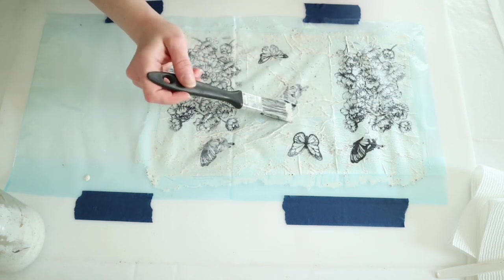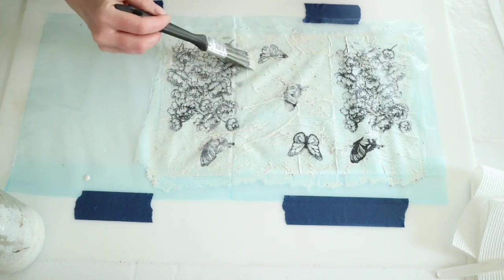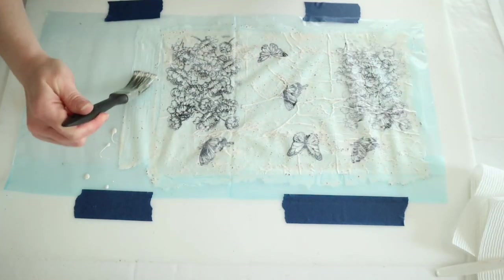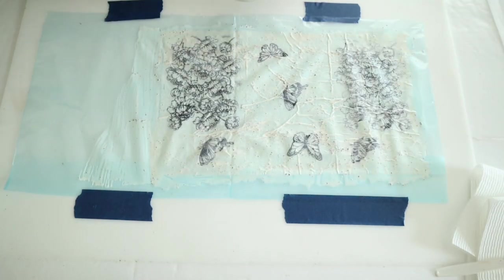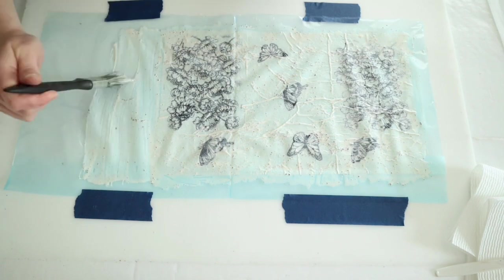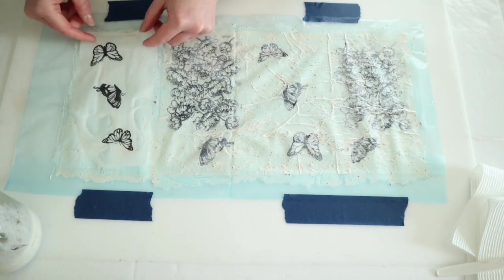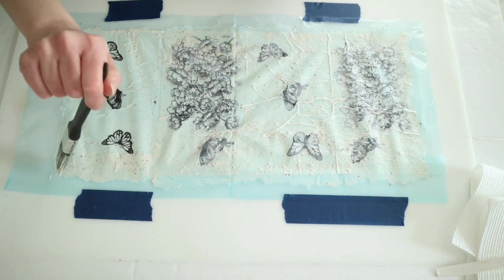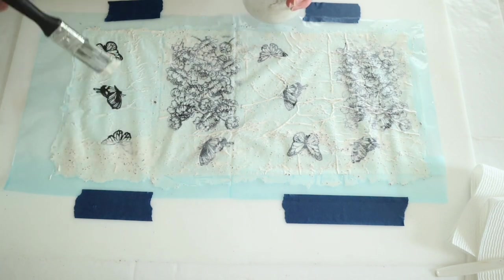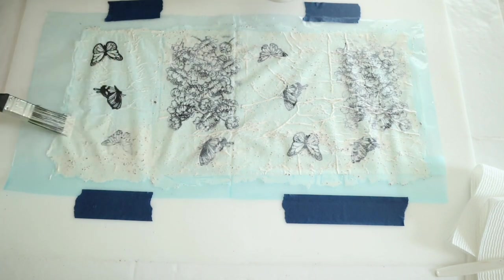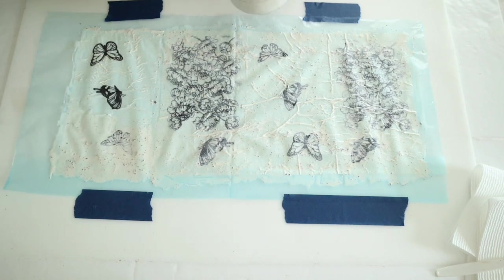I did the exact same process for that fourth sheet—laying down that mixture, then putting my napkin over top, brushing out the bubbles, and adding a layer on top. Once I had all of that done, I set this aside to dry for 24 hours.